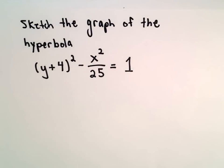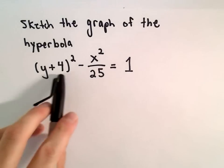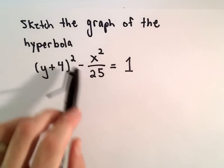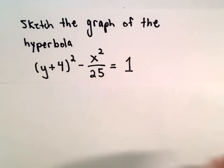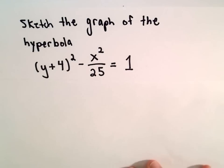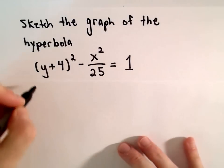In this example, we're going to do a rough sketch of the hyperbola (y+4)² - x²/25 = 1. What I'm going to do is write it in standard form, find the vertices, find the asymptotes, and just make a rough sketch based on that.